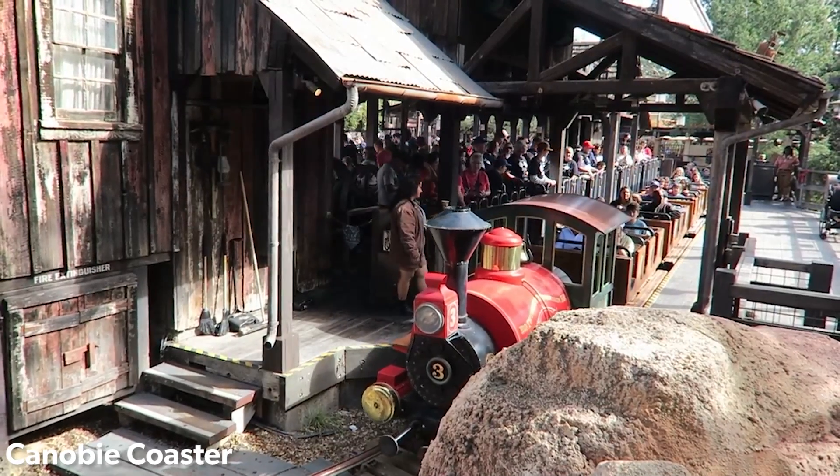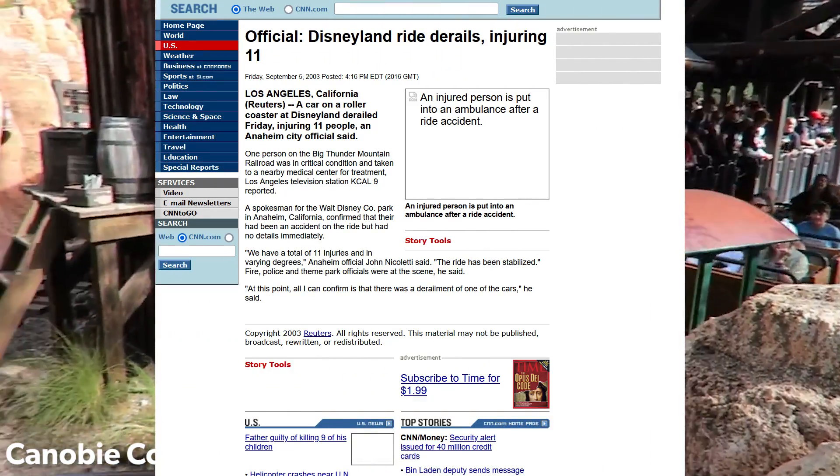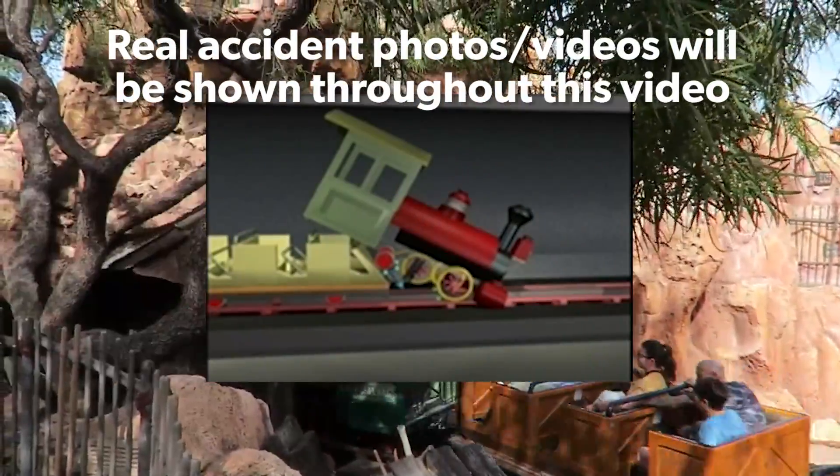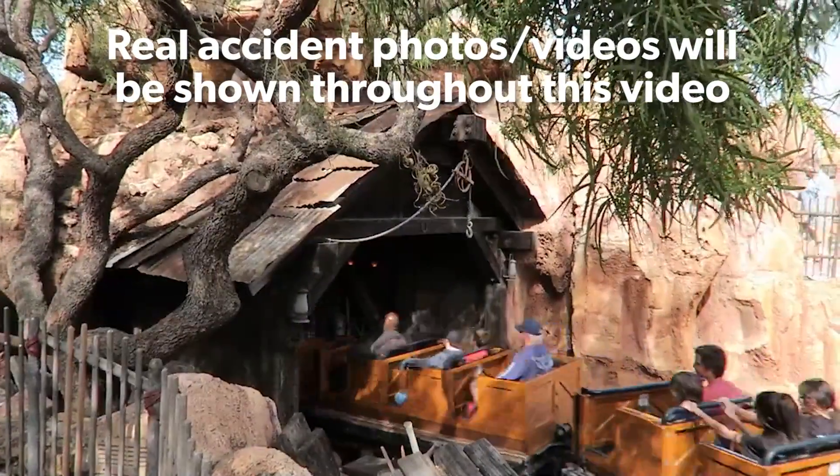On September 5th, 2003, Big Thunder Mountain Railroad at the Disneyland Resort suffered a catastrophic failure that resulted in Train No. 2 derailing and killing one of the two riders seated in the front row.